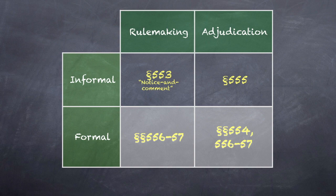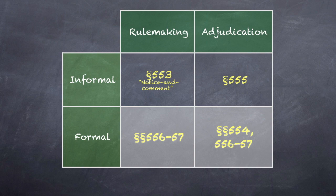As a result, every agency action falls into one and only one of four boxes. Contrary to an erroneous dictum in Overton Park, sections 556 and 557 procedures might apply either to a rulemaking or an adjudication. Congress sometimes requires an agency to make rules not under informal notice-and-comment procedures under section 553, but under formal section 556 and 557 procedures. This table, giving the big picture of the APA structure, is one we will return to again and again during the semester.